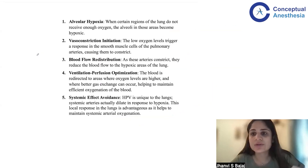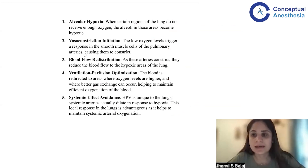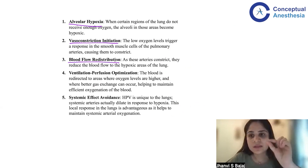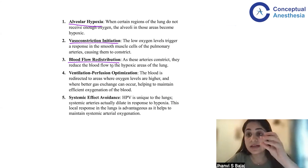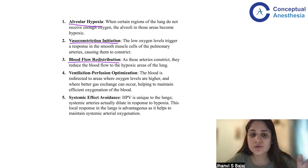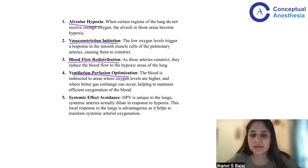When writing the HPV mechanism in the exam, I write it in clear numbered points: Point 1 — there is alveolar hypoxia. Point 2 — vasoconstriction is initiated in response to alveolar hypoxia. Point 3 — because of this vasoconstriction, blood flow is redistributed from the non-ventilated or less-ventilated part of the lung to the ventilated part. Point 4 — this results in matching of ventilation and perfusion, optimizing the V/Q ratio.